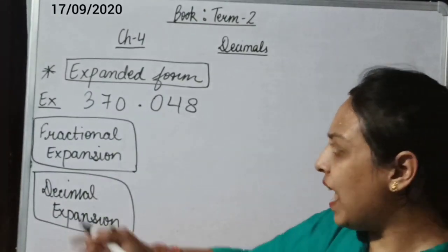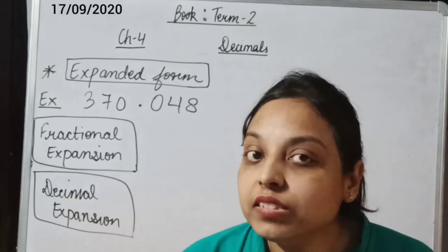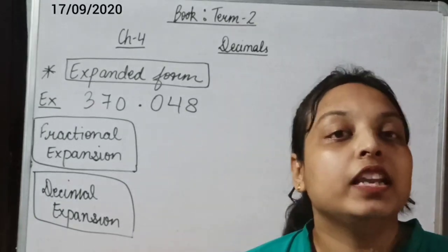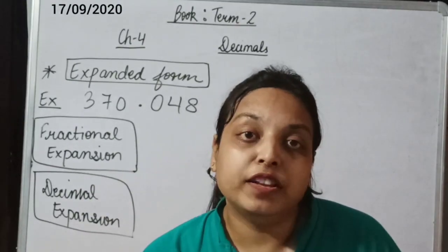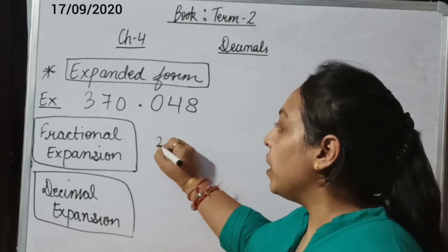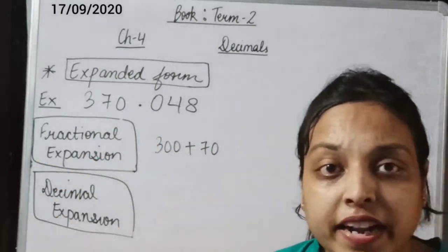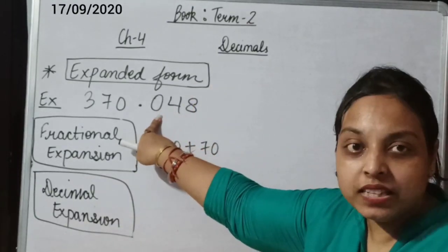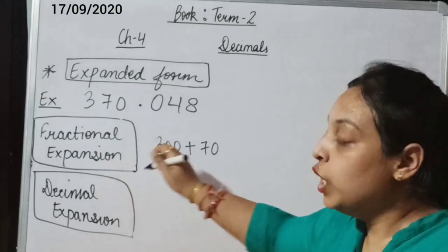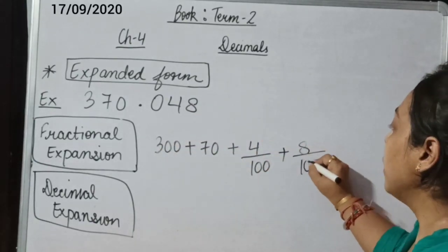Many times examples can have zeros at some place. As we studied in whole number expanded form, if we have a 0 at any place, there is no need to write its place value, because the place value of 0 is 0 and adding 0 does not affect the answer. So 370 is written as 300 plus 70, and we skip the zero. For the decimal part in fractional expansion: there is 0 at the 10ths place so we skip it, then 4 is at the 100ths place giving 4/100, and 8 is at the 1000ths place giving 8/1000.